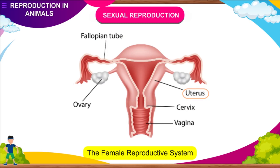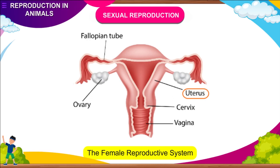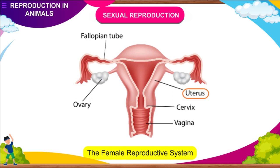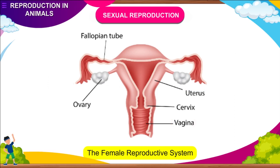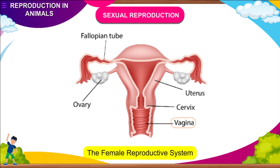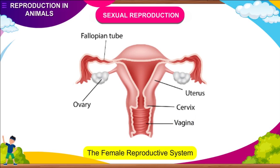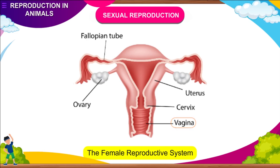Uterus: it is a broad muscular chamber that receives the ovum. The fertilized zygote grows into the foetus here. Vagina: the vagina is a muscular tube into which the uterus finds its way. Females attain sexual maturity at 11 to 12 years of age, at which age they start producing ova.